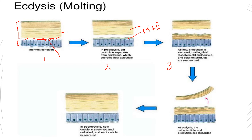Moving towards the third step of molting: another new layer is forming — that layer is mainly the new epicuticle. As the old exoskeleton is being removed from the body of the arthropod, a new epicuticle and new procuticle are forming, which will again result in a complete exoskeleton.